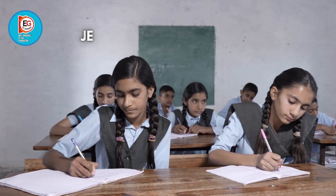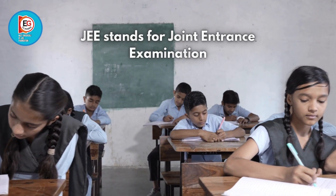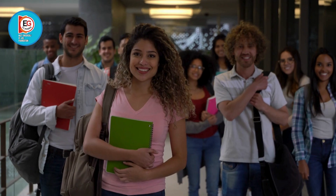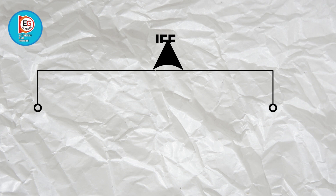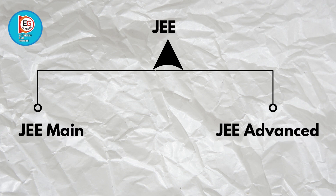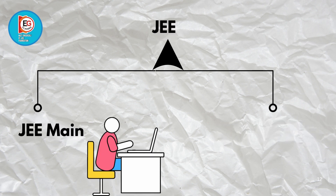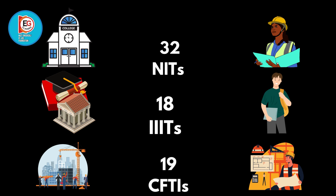Let's start with the basics. JEE stands for Joint Entrance Examination. It's a national level entrance test that lakhs of students take every year to get admission into top engineering colleges like IITs, NITs, IIITs, and more. JEE is divided into two parts: JEE Main and JEE Advanced. You first appear for JEE Main — if you qualify, you're eligible for JEE Advanced. And remember, it's not just for IITs — with your JEE Main score you can get into 32 NITs, 18 IIITs, and 19 CFTIs.